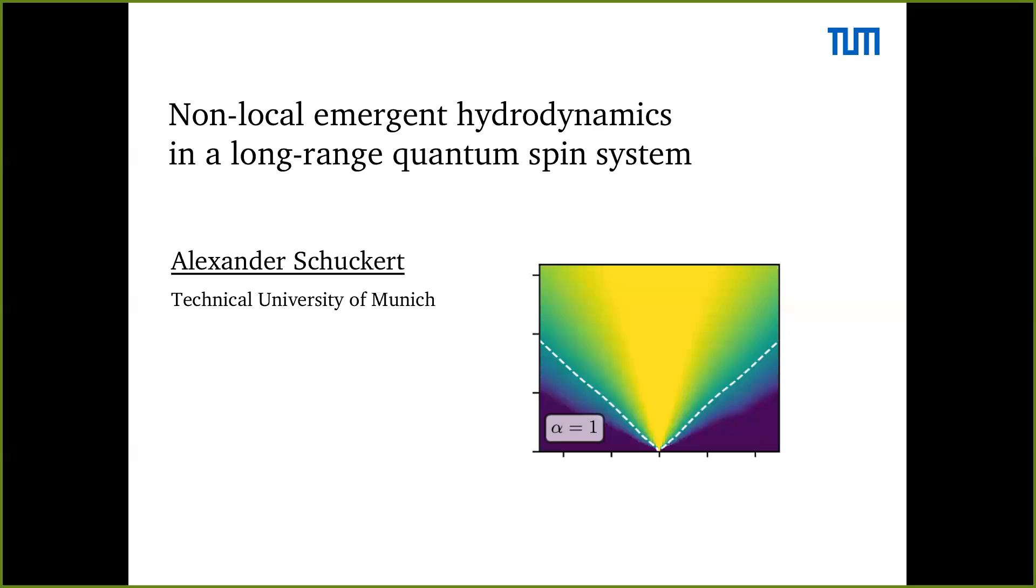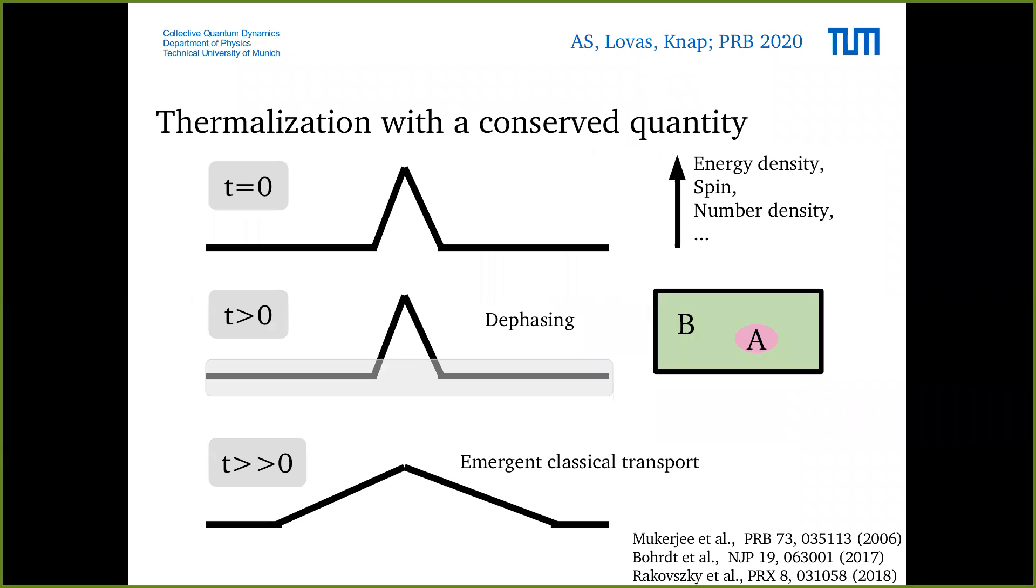We will find that the long-range character of the interactions in these systems will lead to a quite surprising super diffusive type of hydrodynamics at late times. But before coming to that, let me explain the general picture of emergent hydrodynamics. When you have an initial state which has an inhomogeneity in a conserved quantity, the first step of thermalization dynamics is that there's a local dephasing process.